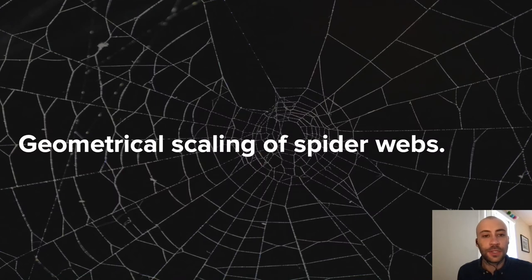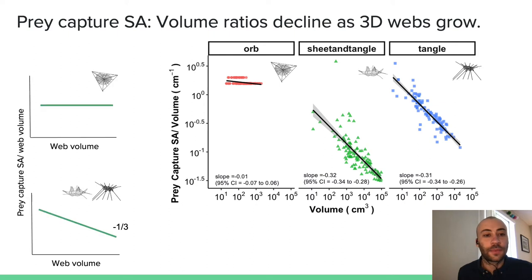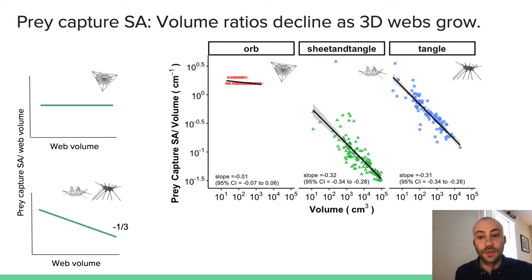First, I'll discuss the results on the geometrical scaling of spider webs. We found that prey capture surface area to volume ratios decline as three-dimensional webs grow, but remain constant in two-dimensional webs. As illustrated in the graph on the right, you'll see volume on the x-axis and prey capture surface area per unit volume on the y-axis. In orbs, prey capture surface area per unit volume is constant as a function of volume, but in both sheet-and-tangles and tangles, it declines to approximately the negative one-third power as a function of volume. This aligns well with the predictions based on the geometry of two-dimensional and three-dimensional objects. It means that as web volume is proportional to web weight and prey capture rate is proportional to prey capture surface area, in three-dimensional webs, as volume and web cost increase, a spider may capture less prey per unit web cost, potentially making a more costly web less effective at obtaining energy.